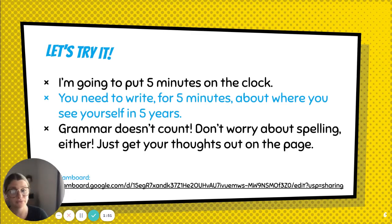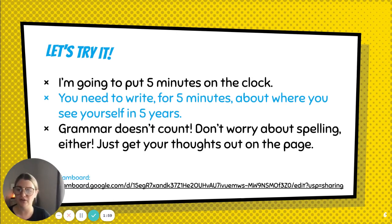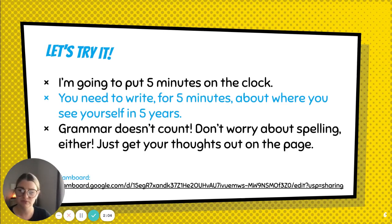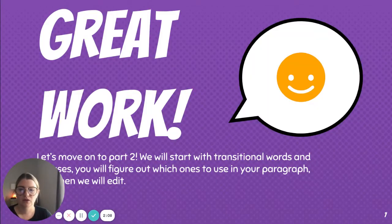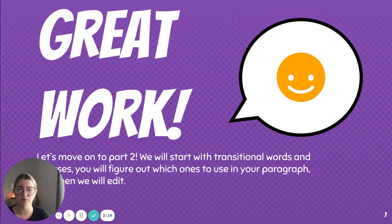Hopefully you paused the video and wrote for five minutes. Once you have that free write, you're just putting your thoughts out there — where am I going to be in five years? You can even start like, 'I don't know where I'm going to be, but I want to do this, I want to do that.' Just write down anything you can think of. Great work on your free writing, part one. Now let's move on to part two. I'm going to start with transitional words and phrases, then we'll figure out which ones to use in your paragraph, and then we'll get to the last step, which is editing.